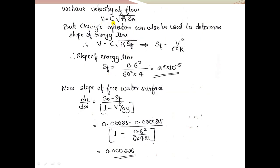Using Chezy's equation modified for the slope of energy line — V = C√(R·SF) — we solve for SF = V²/C²R. With V = 0.6 m/s and C = 60, substituting gives slope of energy line SF = 2.5 × 10⁻⁵.